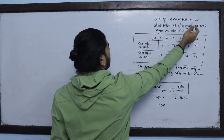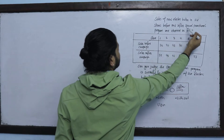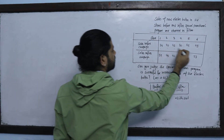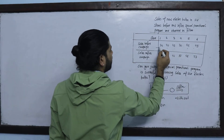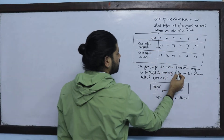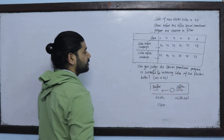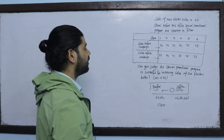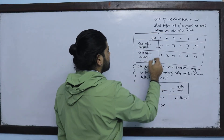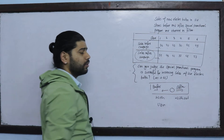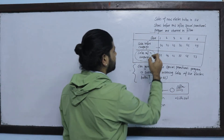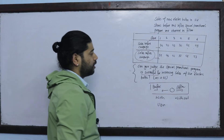Sales of new electric bulbs in six stores before and after a special promotion program are observed as follows. Can you judge whether the special promotion program was successful for increasing sales of electric bulbs? If sales after the campaign are increased, that means it is successful.